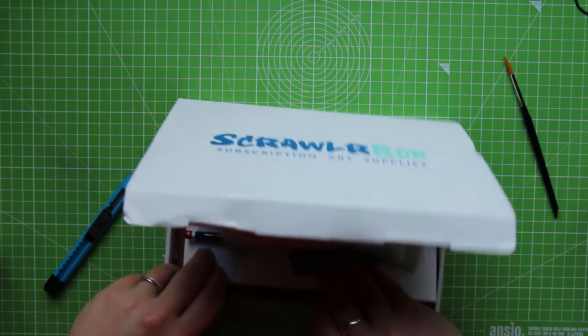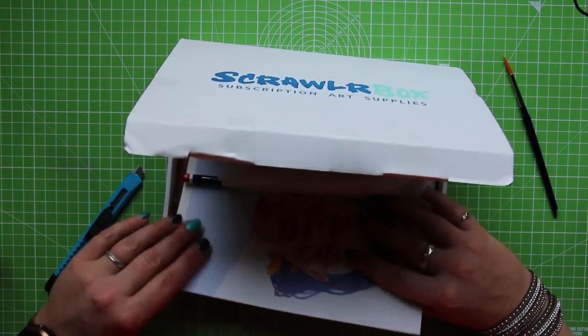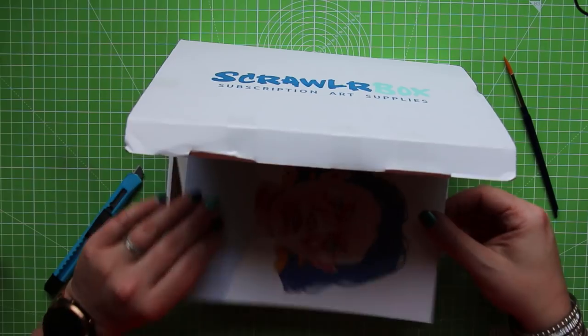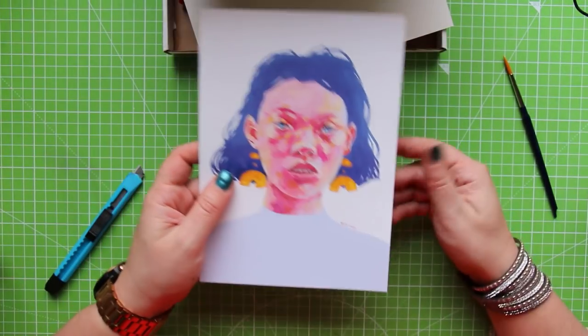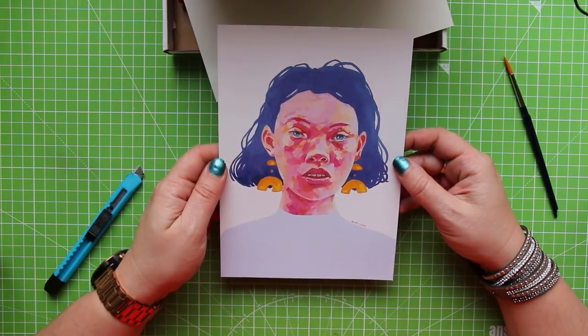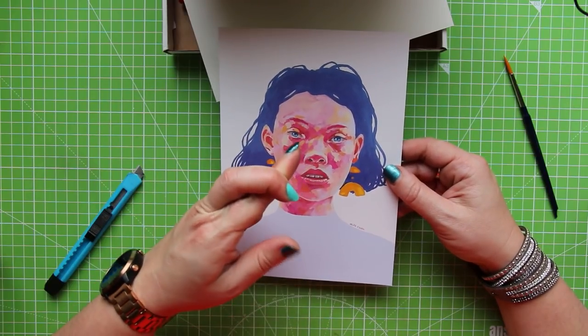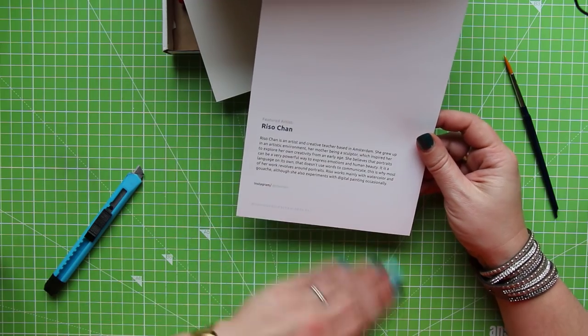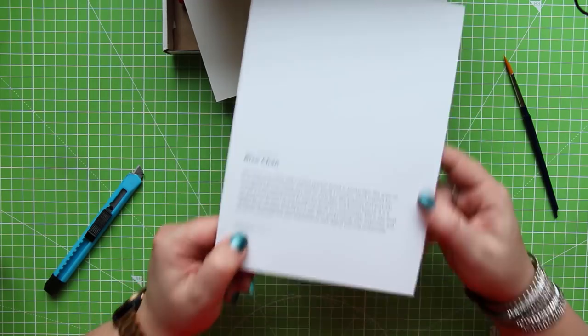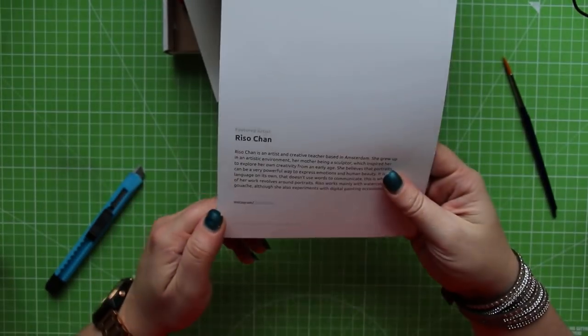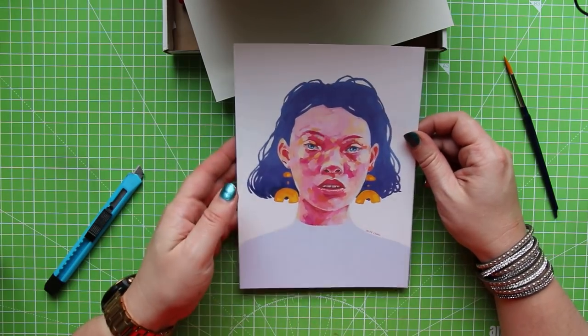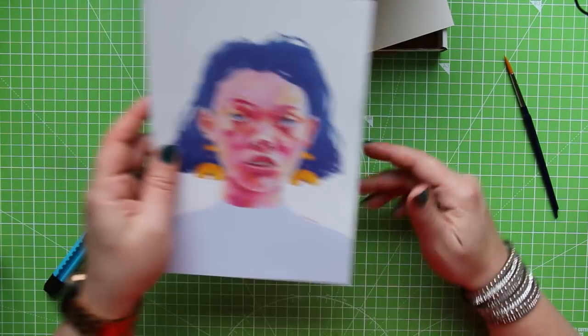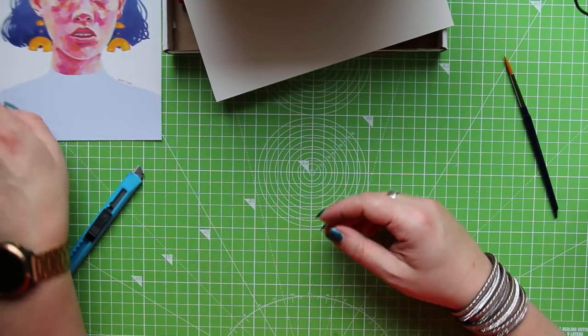As per usual with Scrawler Box, it is the UK's only subscription box and there are certain things that we always get. One is an artwork by a featured artist, obviously done in paint by the looks of things, please be watercolours. Riso Chan is the artist based in Amsterdam and they are also a teacher, so also have an Instagram account which is listed down here.